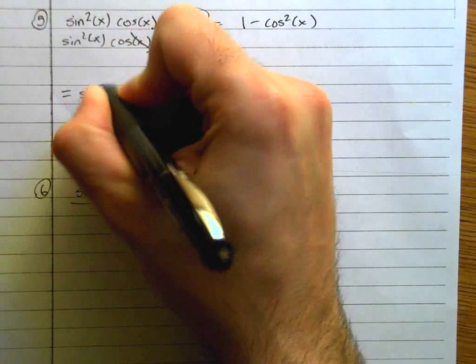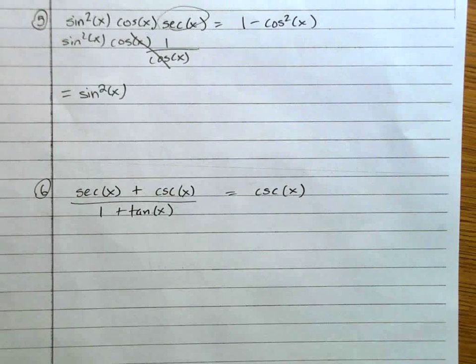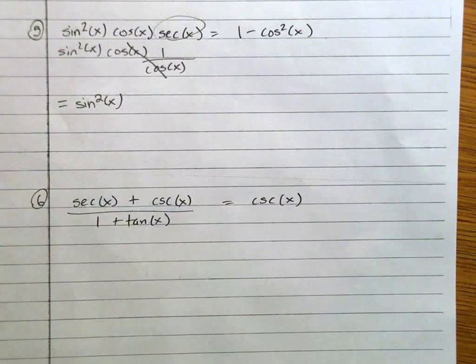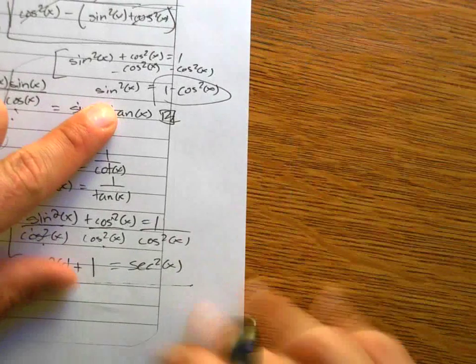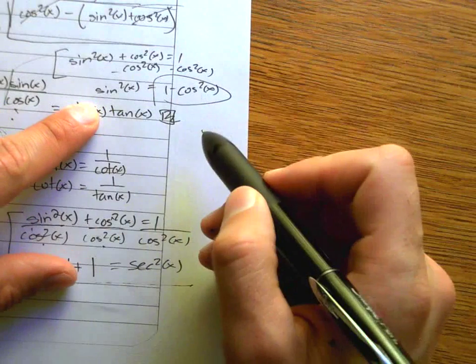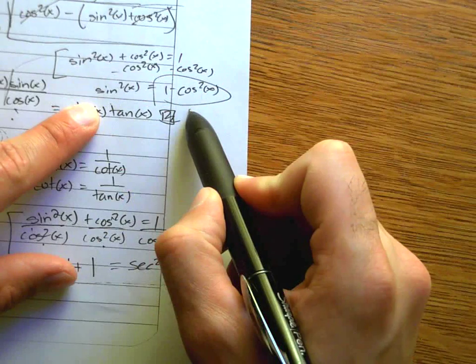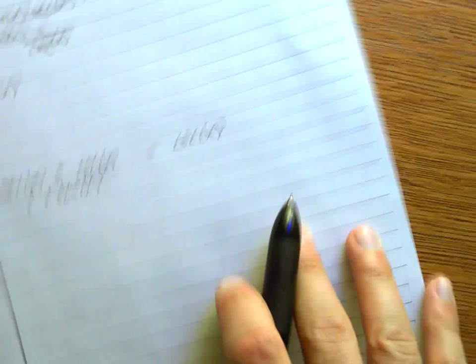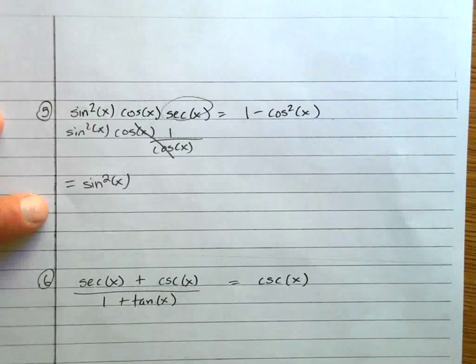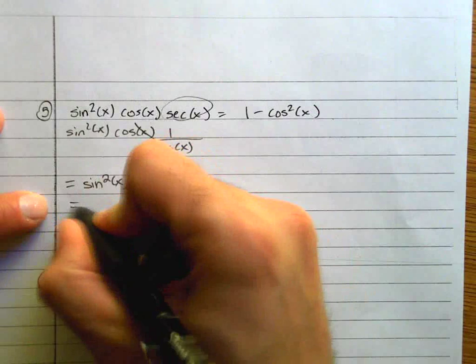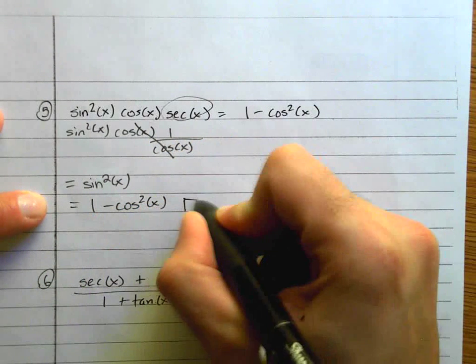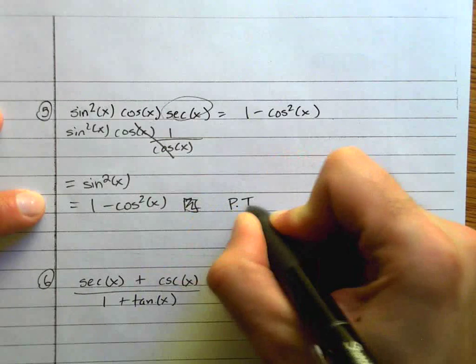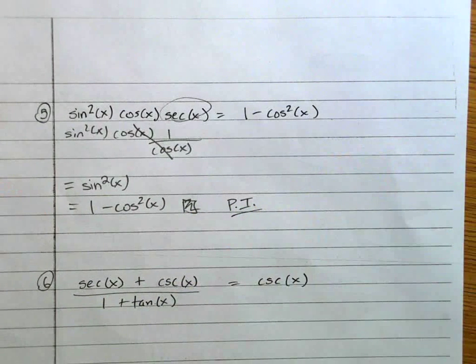But look at what we've already proved. We proved that sine squared, like over here, remember, we proved that sine squared is 1 minus cosine squared, which is what we're trying to prove. So I can literally now just write equals 1 minus cosine squared, and I'm done. And I can say that's because of the Pythagorean identity. I've proved that. Let's move on.